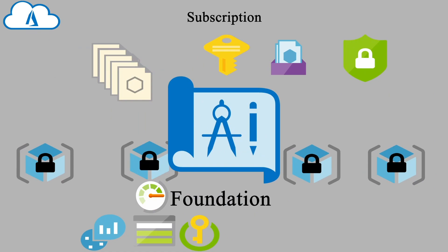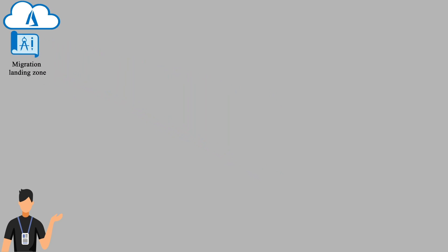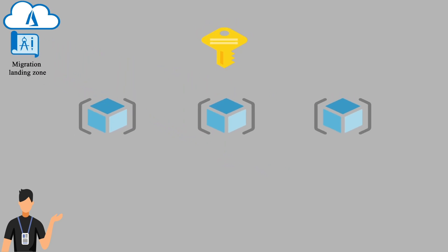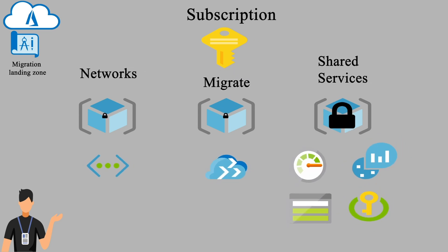Once that is deployed, for those going on to a migration workload we have the Migration blueprint. We'll layer this on top of our existing environment, reusing our shared services and network resource groups, and deploying a new Azure Migrate resource group. All groups will be locked. We'll deploy a virtual network pre-configured with recommended subnets and network security groups, plus Azure Migrate pre-staged with all the server and database migration tools you'll need.